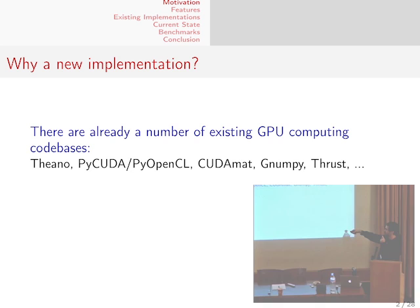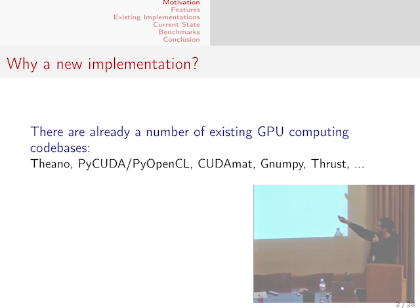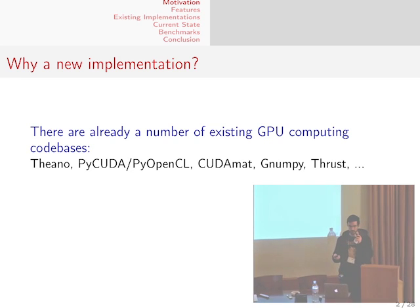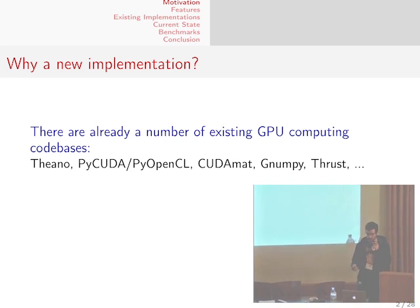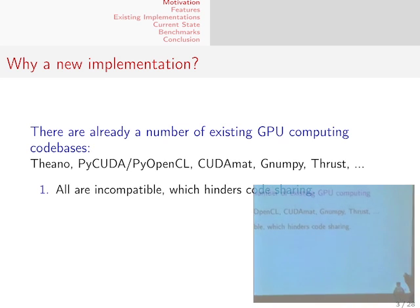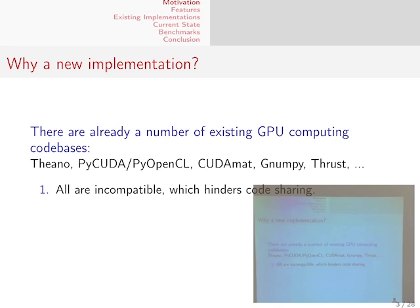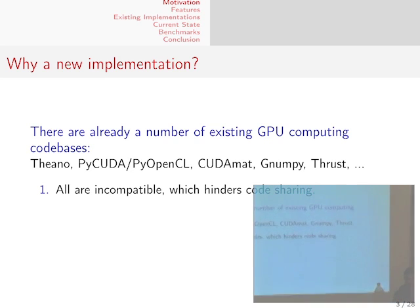The Theano codebase has one, PyCUDA, NumPy, OpenCL, CUDAMath, and Thrust all have some sort of GPU NDArray object. But all of these are incompatible, so it renders code sharing difficult because you have to convert the data representation and underlying object whenever you want to port a kernel from one codebase to the other.